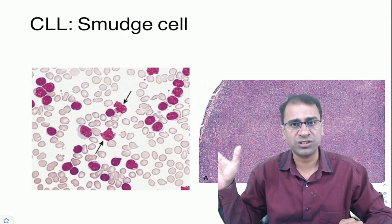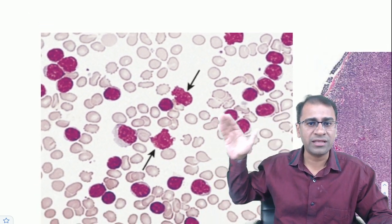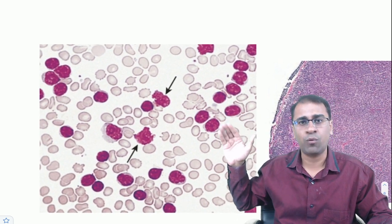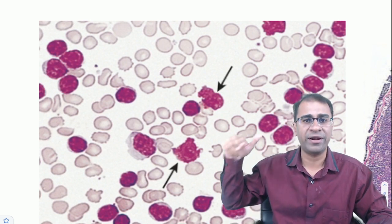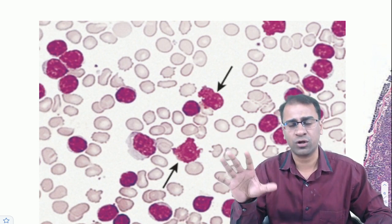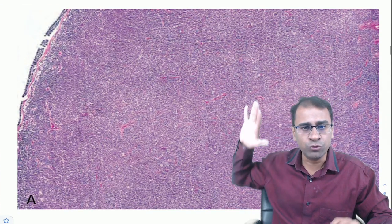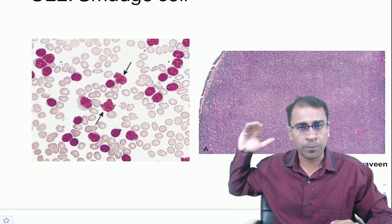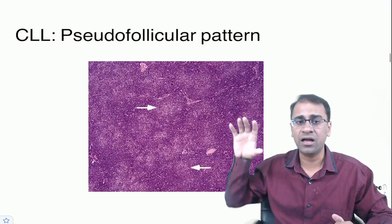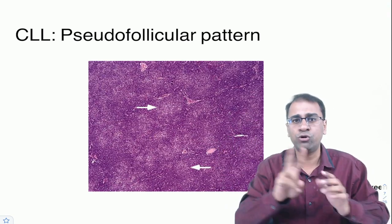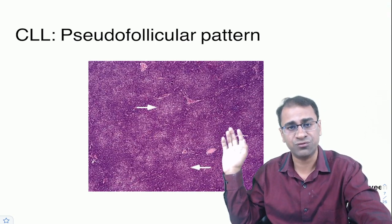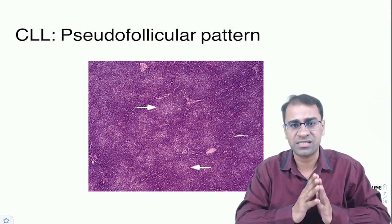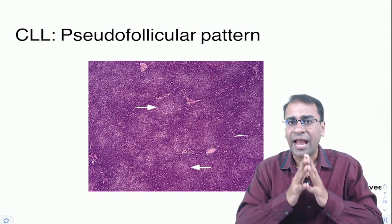The first lymphoma is CLL. On a peripheral smear you see a smudge cell appearance — also called a 'smear cell' appearance. The biopsy shows diffuse effacement of the lymph node architecture by small lymphocytes. Importantly, on biopsy you find a pseudofollicular pattern with proliferation centers — a very important finding in CLL. The main mutation is 13q deletion, causing a microRNA that silences p16.